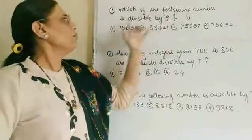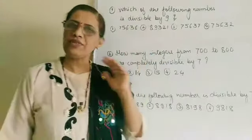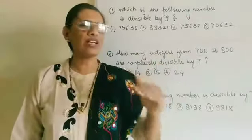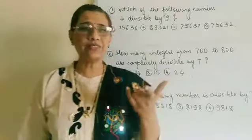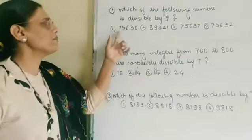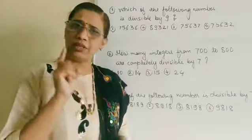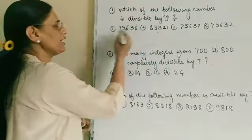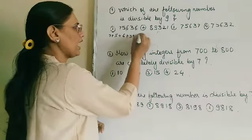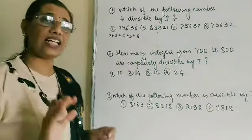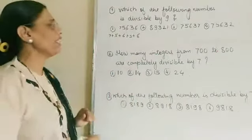Which of the following numbers is divisible by 9? In this video we will take divisibility tests from 2 to 11. We will apply the divisibility test for 9. The rule is: if the sum of the digits is divisible by 9, then the number is divisible by 9. We take the sum of all the digits, and if that sum is exactly divisible by 9, then the whole number is divisible by 9.